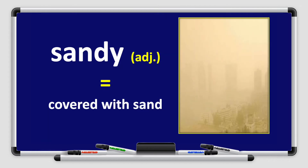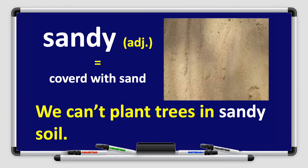We have the word sandy. Sandy is an adjective which means something is covered with sand. I use sandy to describe something covered with sand. Look at the picture. For example: We can't plant trees in sandy soil. Can you use sandy in a sentence? I'm sure you can.